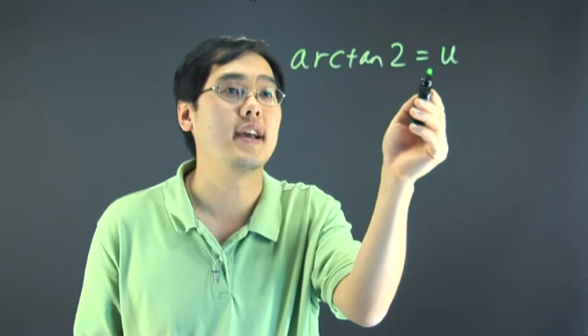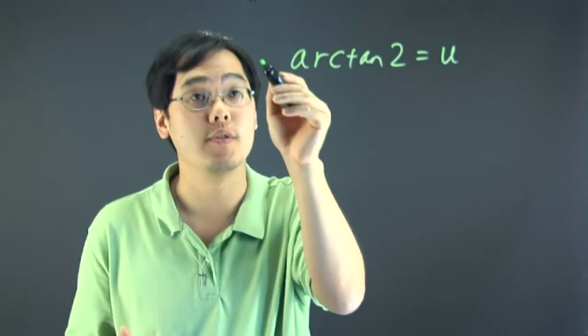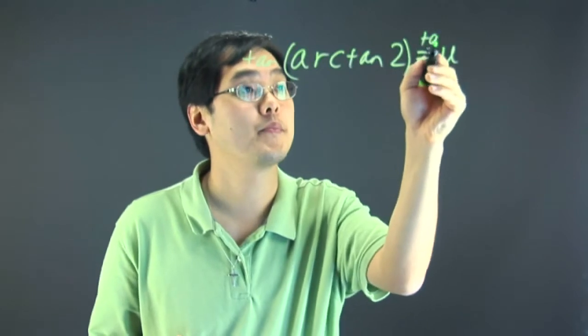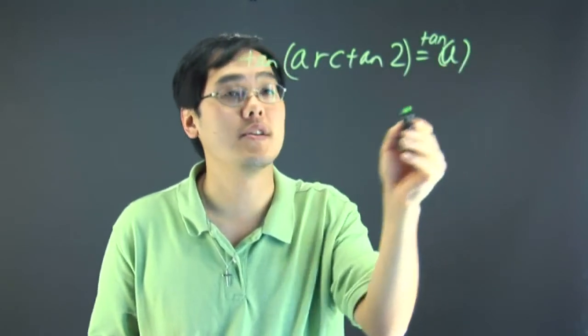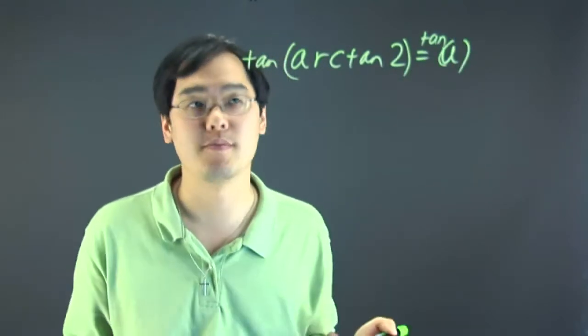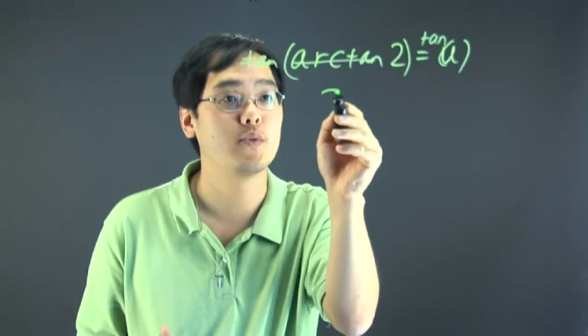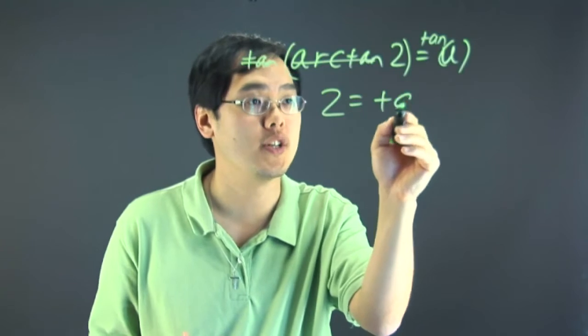To degrade arctan, you want to take the tangent of both sides. What that means is you're not multiplying, but you're taking the tangent of both sides. The operations tan and arctan cancel each other out, so you're left with 2 = tan u.